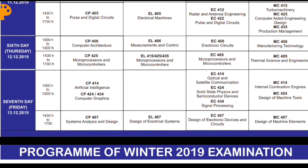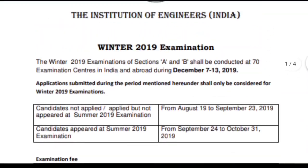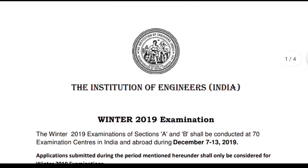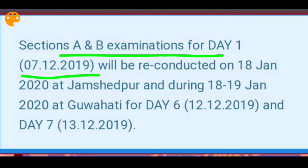For Day 6 and Day 7 — that is 12th and 13th December — these exams were already conducted but will be re-conducted by the Institution of Engineers for two specific exam centers or regions. This is the officially published notification from the Institution of Engineers India. It states that Section A and B examinations for Day 1, that is 7th December 2019, will be re-conducted on 18th January 2020 at Jamshedpur.